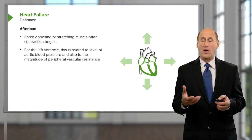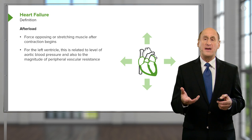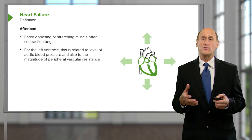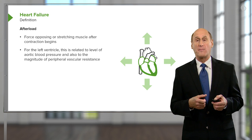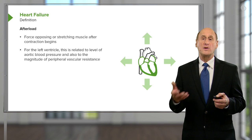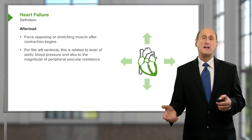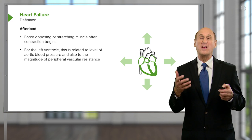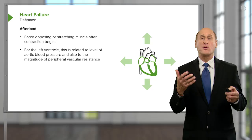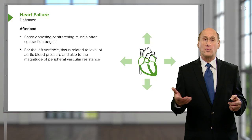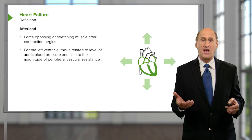Afterload is the work of the heart — it's the resistance the ventricle feels when it is pumping out. This is usually due to resistance in the vascular system. Increased peripheral vascular resistance leads to increased afterload, increased work of the heart, which is not good in heart failure. And here's a clue: when we talk about therapy of heart failure, one of the things is to decrease afterload, to decrease the work of the ventricle and hope that it will recover from its depressed state.